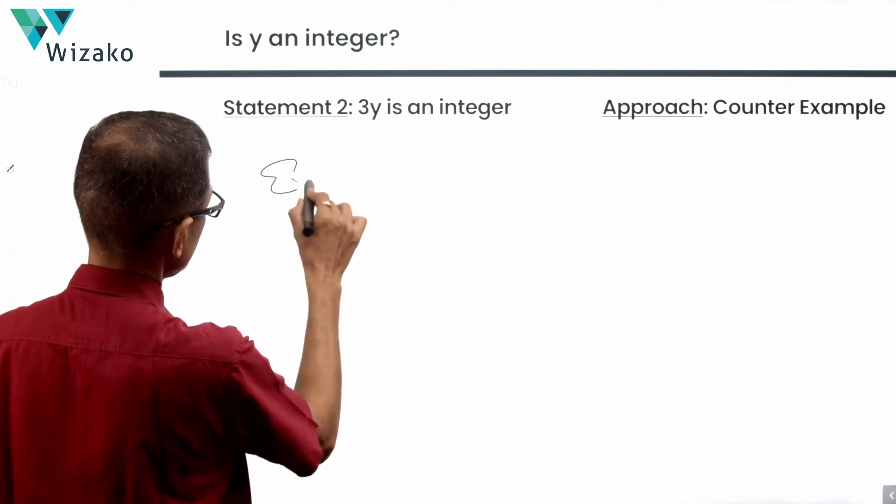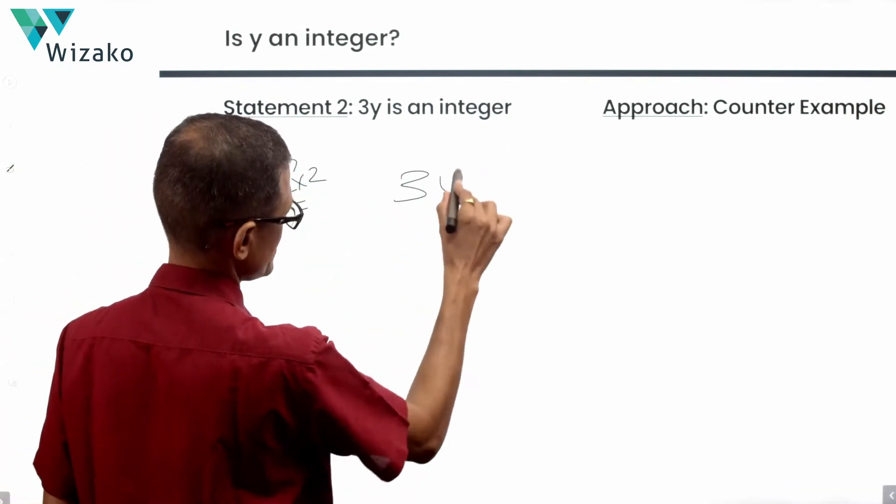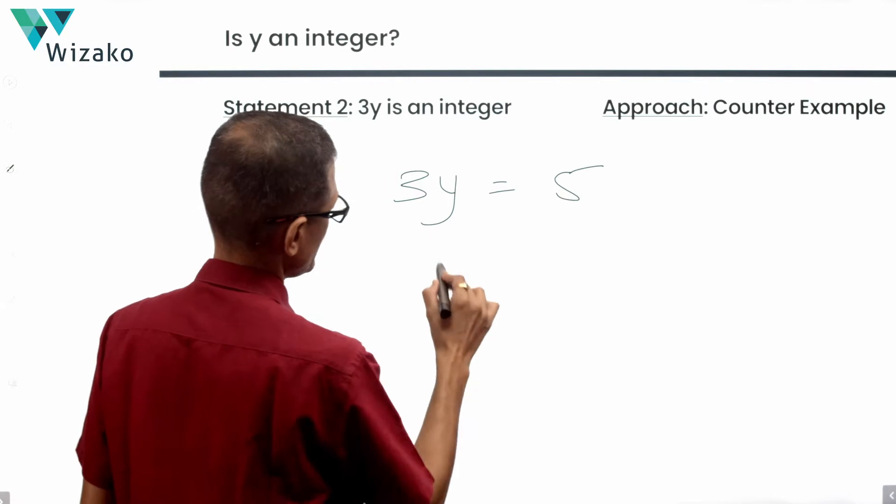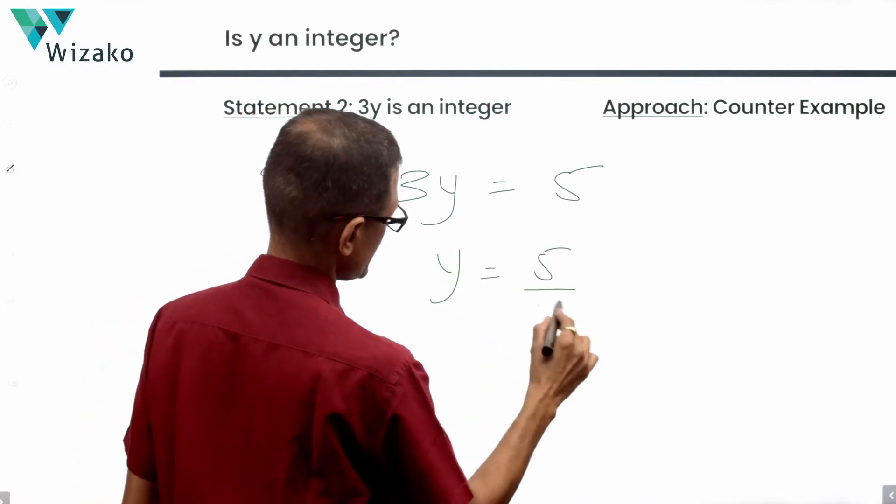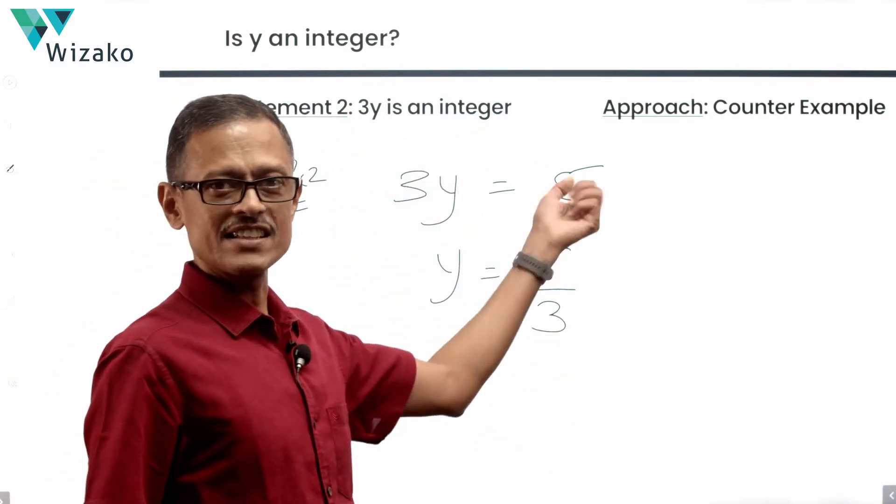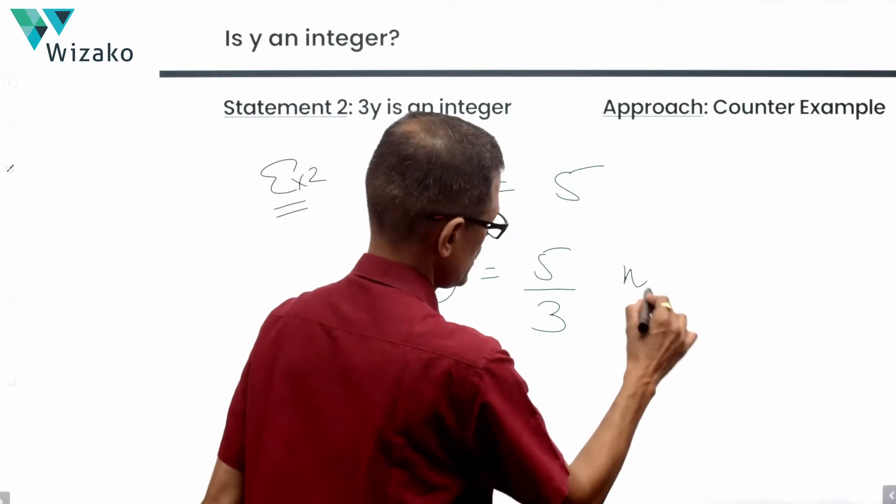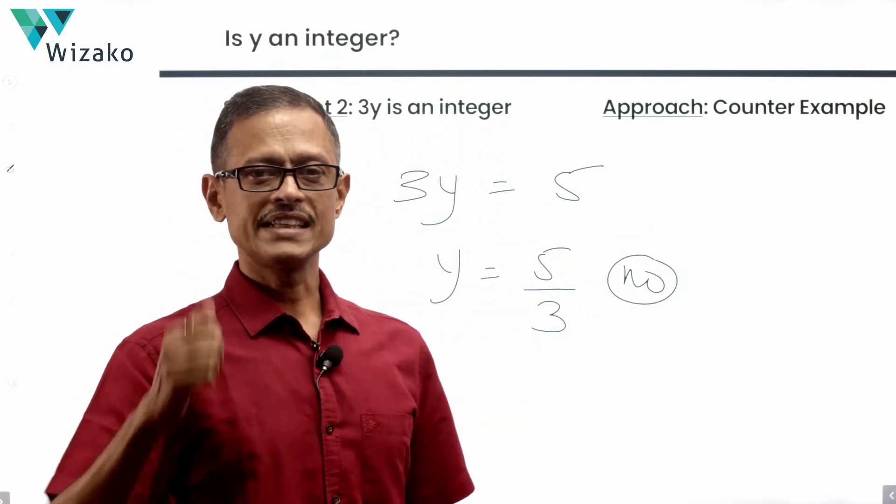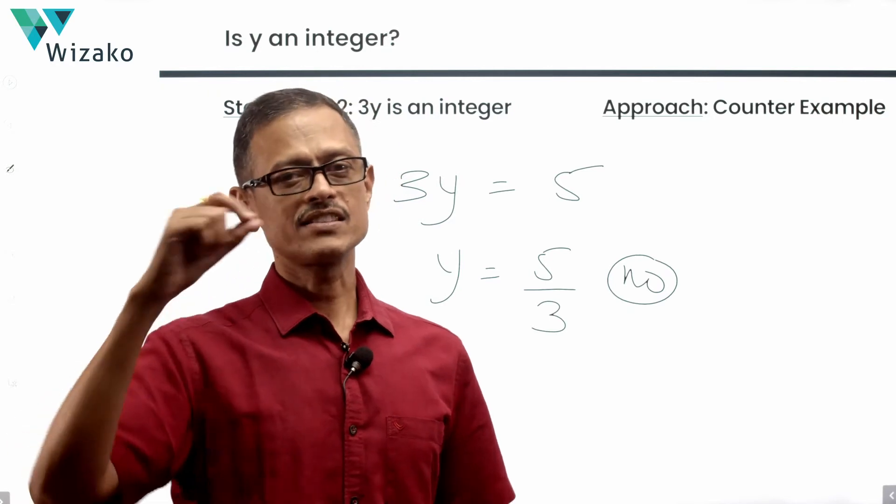Example 2, I'm going to take is basically add a 1 or subtract a 1 from what we had in the last example. 3y is equal to 5. Y is equal to 5 over 3. Is 3y an integer? Yes. Is y an integer? No. Previous example, when 3y was equal to 6, the answer was yes. When 3y equals 5, answer is no.